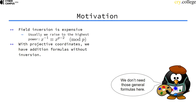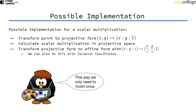With projective coordinates, we have formulas for point addition that actually work without inversion. However, we don't really need those formulas here, but one way to think of that is that we keep the divisor of all our computations in projective space, and then just at the very end, we have the divisor in the z coordinate, and we only have to invert the z coordinate once. So if we do point addition in projective space, we only have to invert once.